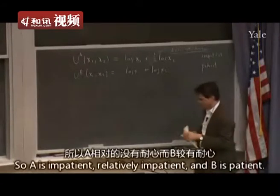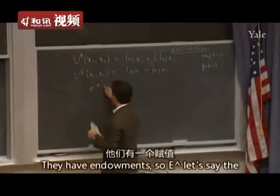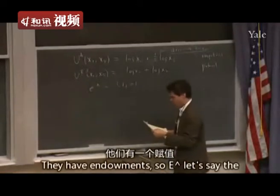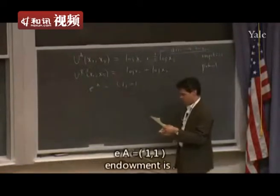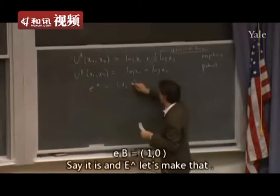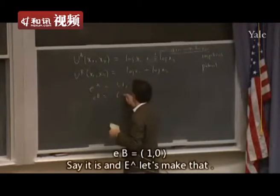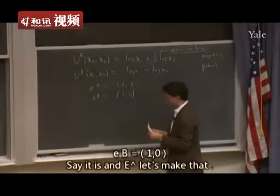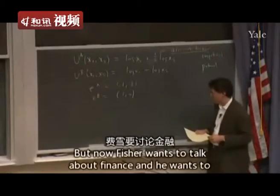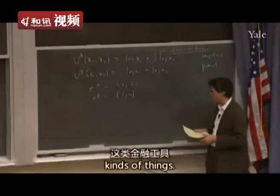Then let's give them endowments: E_A equals (1, 0) — wait, let's say (1, 1) — and E_B equals (1, 0). Now Fisher wants to talk about finance: stocks, bonds, interest, and all kinds of things. He says, we've talked about goods with no problem. We can talk about goods today and next year with no problem. Let's talk about stocks. What is a stock? Let's say there are two stocks: stock alpha and stock beta.